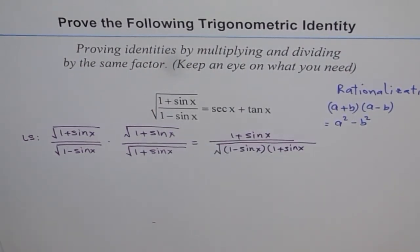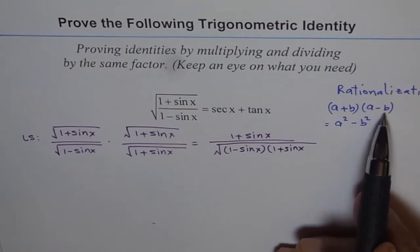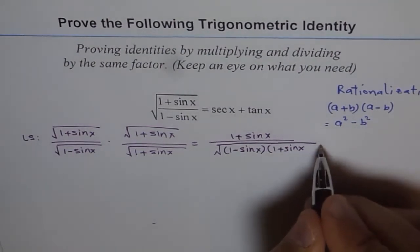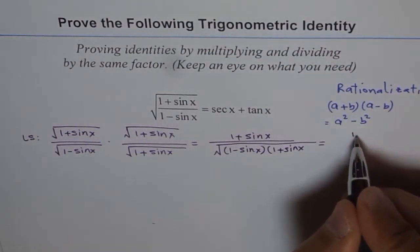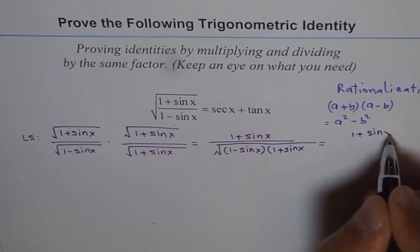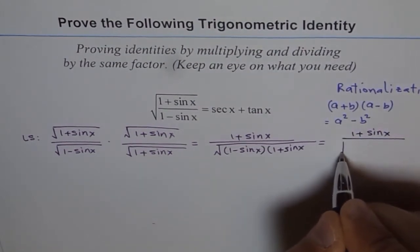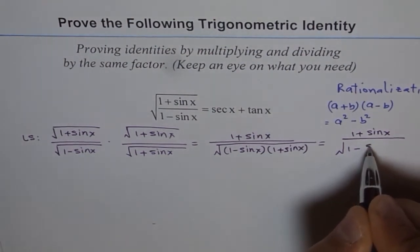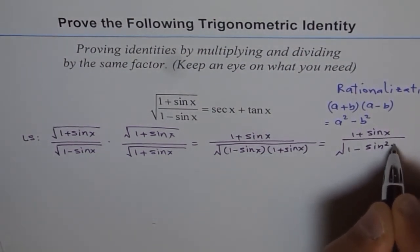They will get multiplied. And this is like a plus b times a minus b. So here we will get this as 1 plus sin x divided by square root of 1 minus sin square x.